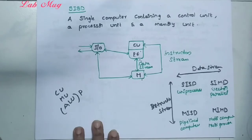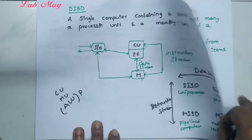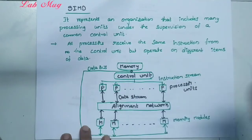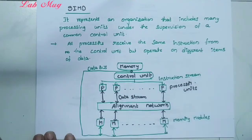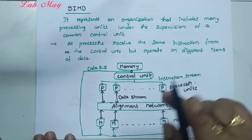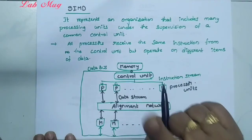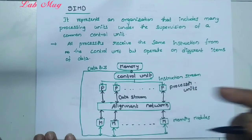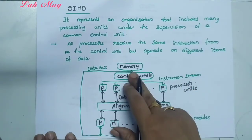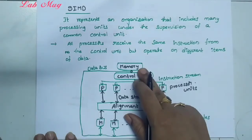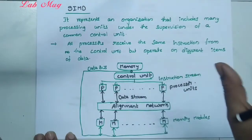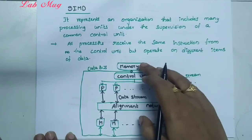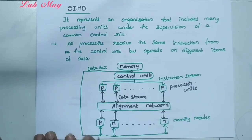So that is Single Instruction Single Data — one processor, one control unit, all operations performed at one time. The next category is Single Instruction Multiple Data. Single Instruction Multiple Data means the instruction is single, but what is multiple? Multiple data streams.